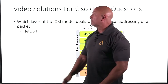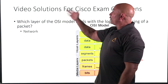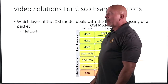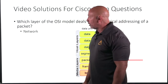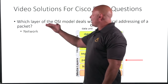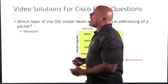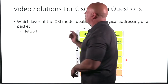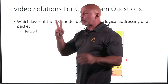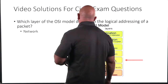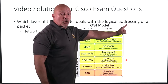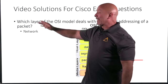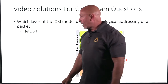Welcome back everyone. Video solutions for Cisco exam questions from AlphaPrep — OSI questions. Which layer of the OSI model deals with logical addressing of a packet? Two key words right there: logical addressing and packet. What does that deal with?